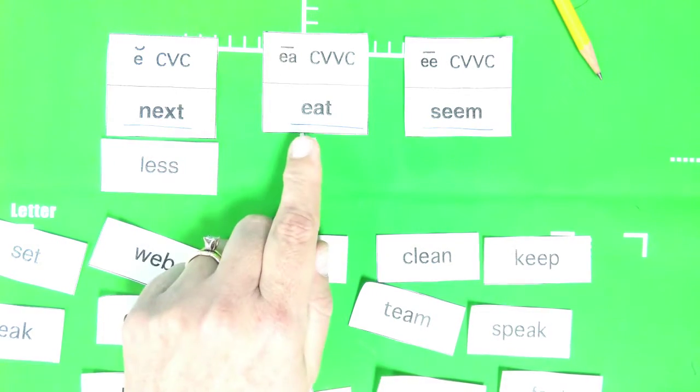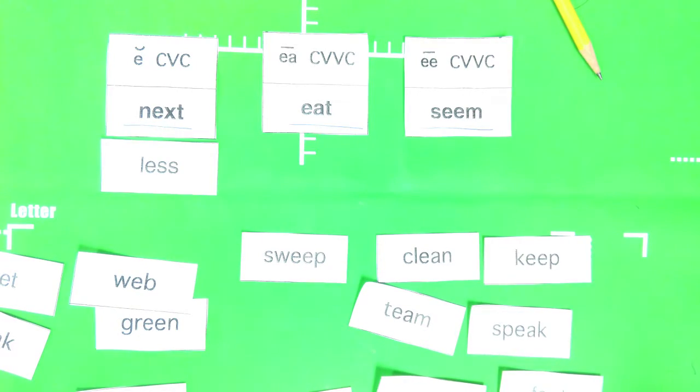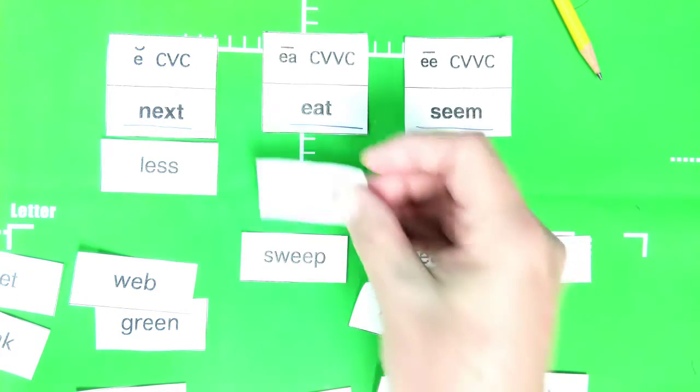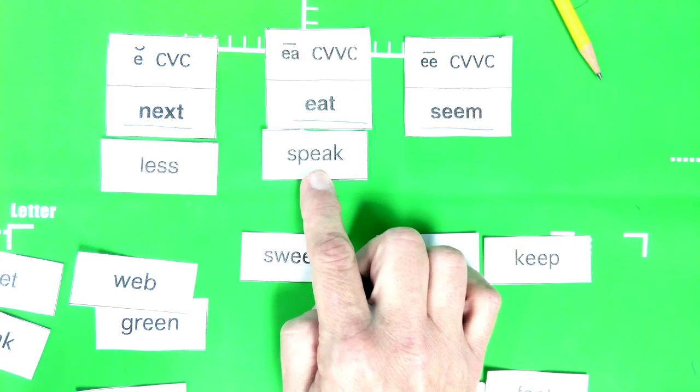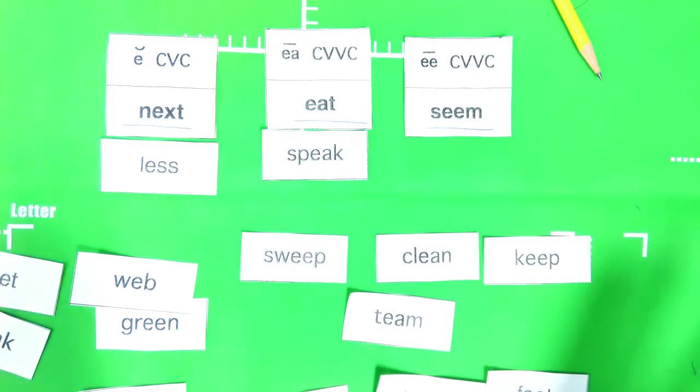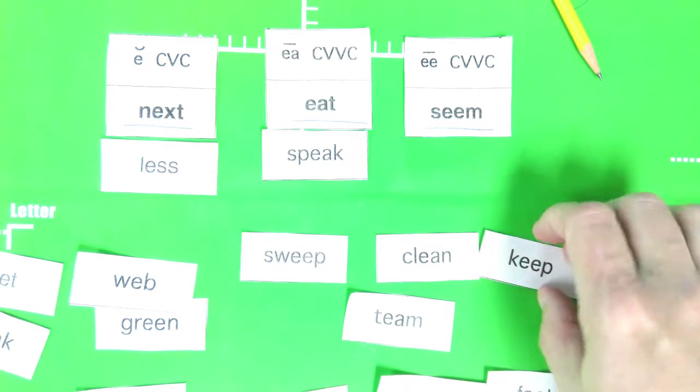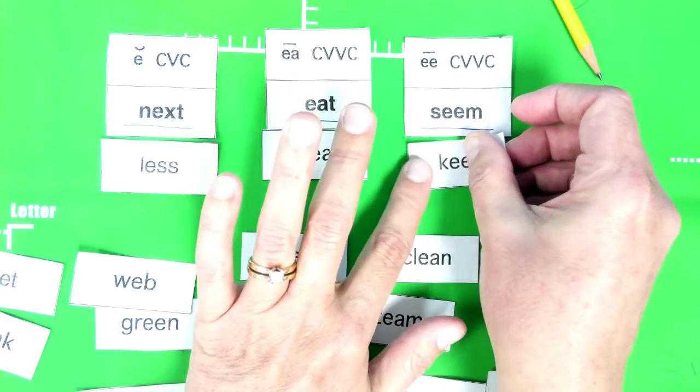Now I'm going over to the consonant vowel consonant, but the consonant pair is E-A, so I'm looking for a word that has E-A. I think I found one: speak. Now because it's an E-A combination and the E is first, it says the long vowel sound E. Okay, and now I need an E-E. I found one, it's keep. Two E's together says the long vowel sound for E, keep.